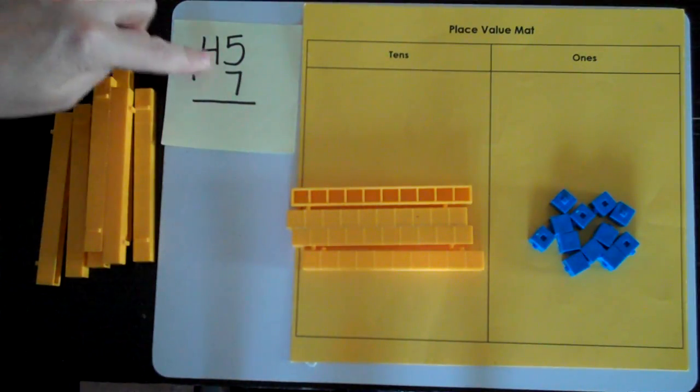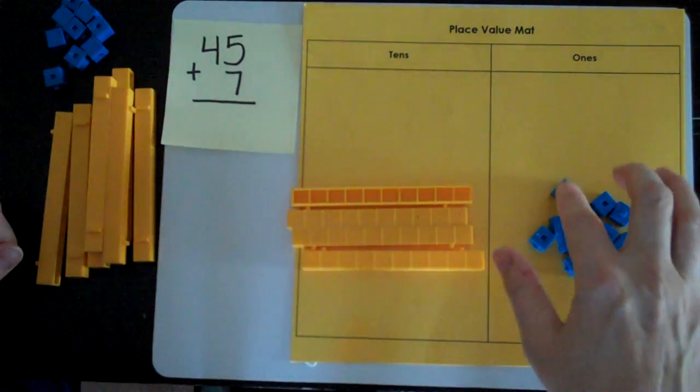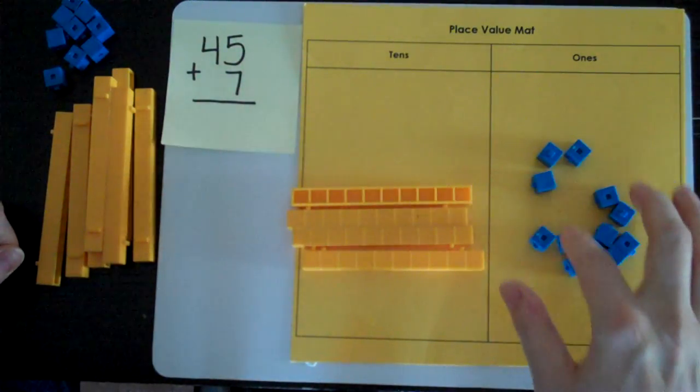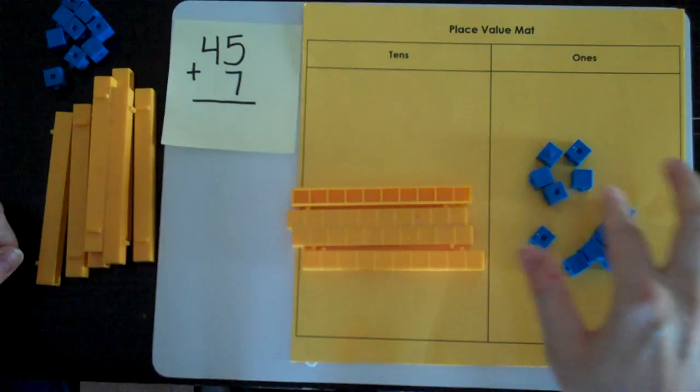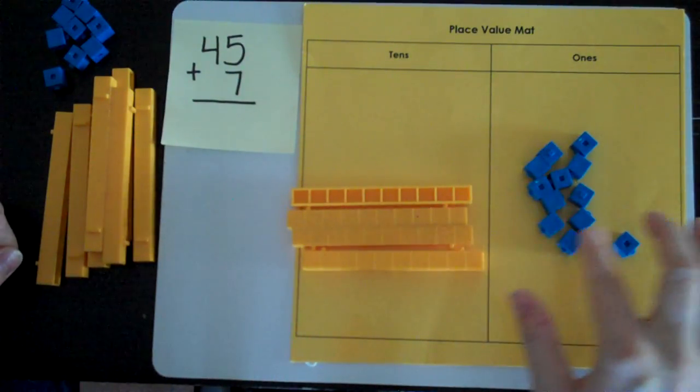And the tens place I'm going to bring just across since there was no tens to join. When we add, it's always a good habit to start with the ones place. So I'm going to count how many ones I have. One, two, three, four, five, six, seven, eight, nine, ten, eleven, twelve.